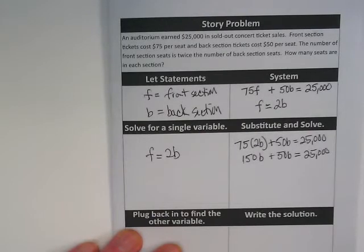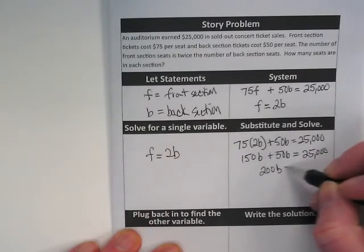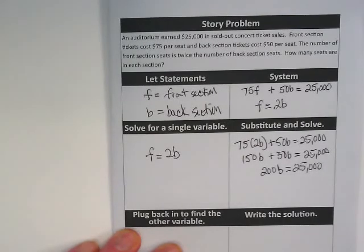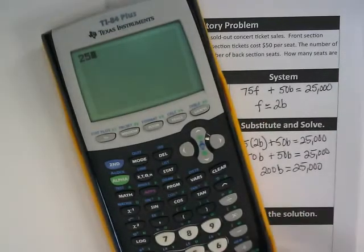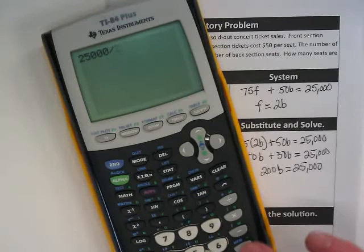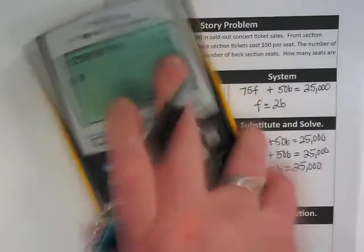What is our next step? We're going to combine like terms and we get 200B equals 25,000. And then we divide 25,000 by 200 and we get 125.